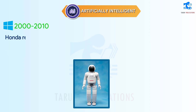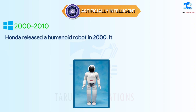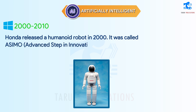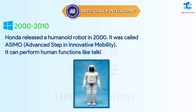Honda released a humanoid robot in 2000. It was called ASIMO, Advanced Step in Innovative Mobility. It can perform human functions like talking, walking, and using its arms.